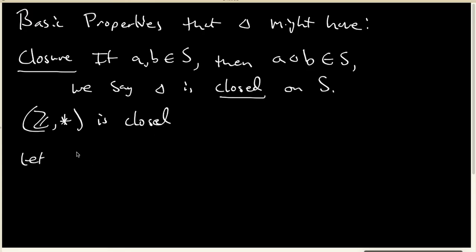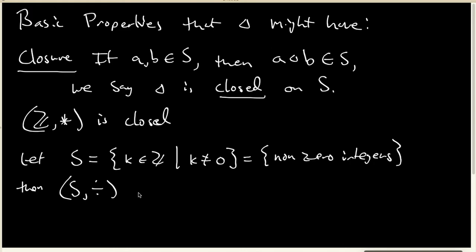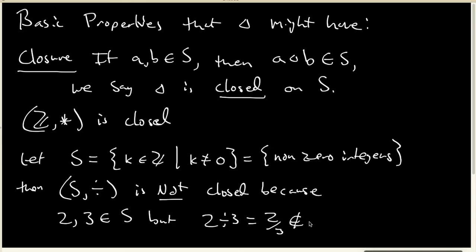If I let S equal the set of K's inside Z such that K is not equal to zero—in other words, S is the set of non-zero integers—and I think about looking at S under division, S under division is not closed. Because two and three both belong to S, but two divided by three is two-thirds, and two-thirds is not an integer, so it's clearly not inside S.